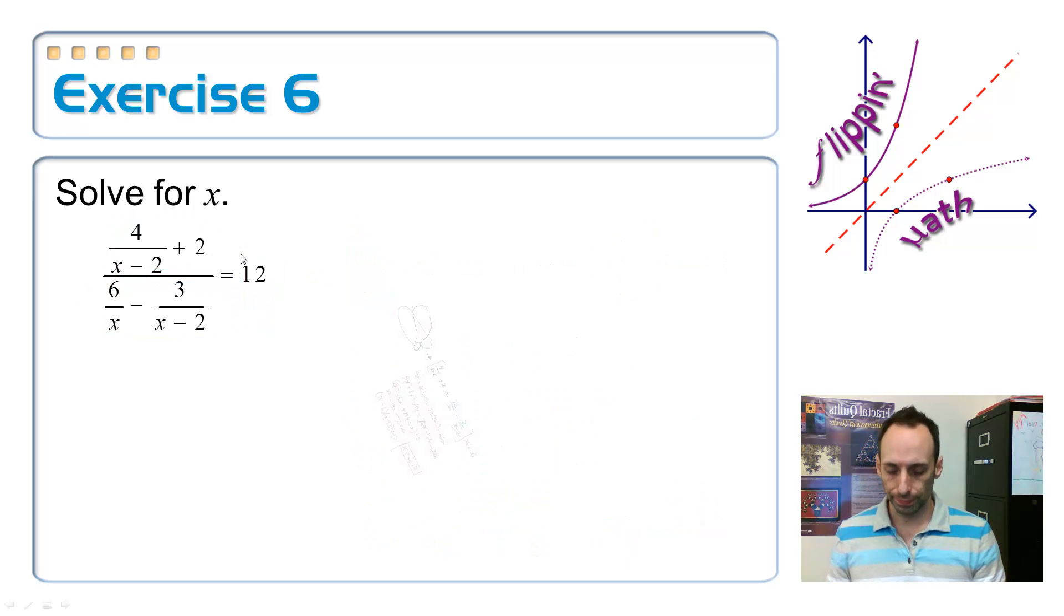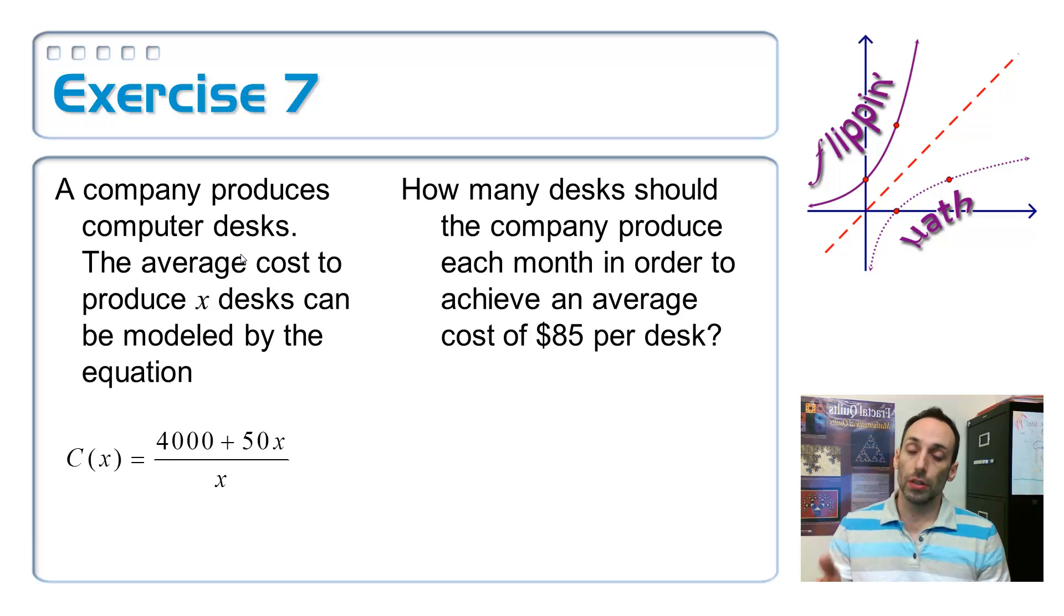Let's try a word problem here. Company produces computer desks. The average cost to produce x desks can be modeled by this equation. So, c of x, c of x, that's the average, right? That's the average cost. How many desks should the company produce each month in order to achieve an average cost of $85 per desk? Where's the $85 going to go? Is it going to go in for x, or is it going to go in for c of x?